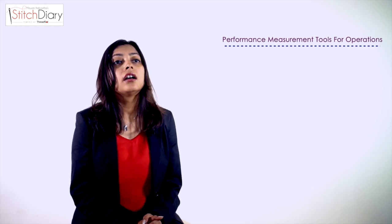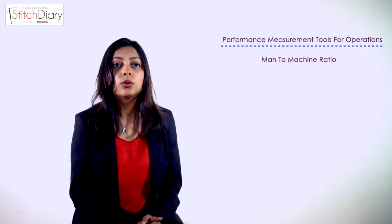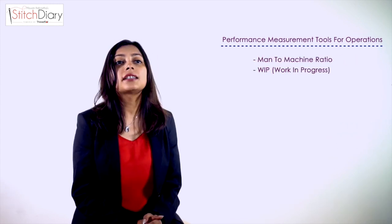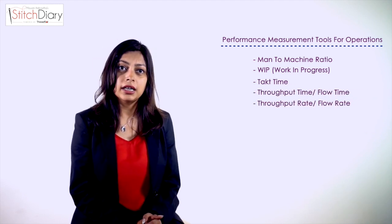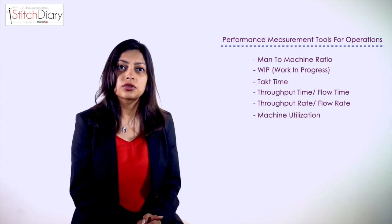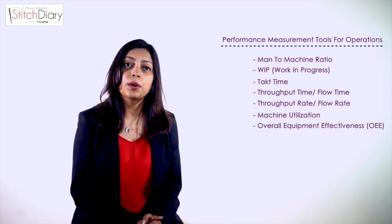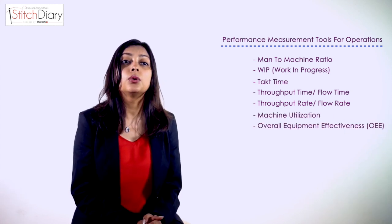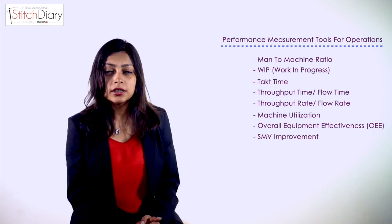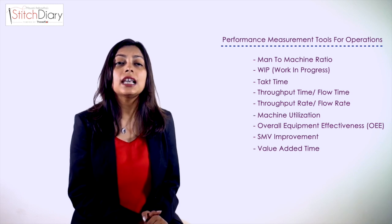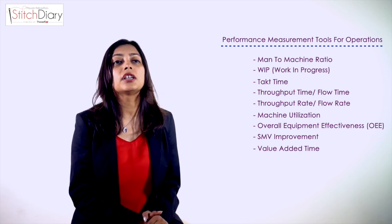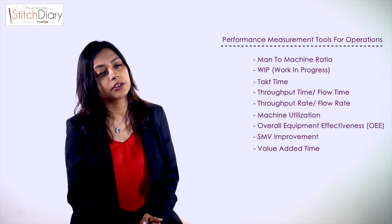Key performance indicators for the Operations Department are: Man to Machine Ratio, Work in Progress, Tag Time, Throughput Time or Flow Time, Throughput Rate or Flow Rate, Machine Utilization, Overall Equipment Effectiveness or OEE, SMV Improvement and Value Added Time. These are just some of the key parameters to measure key performance of the Operations Department in the garment industry.